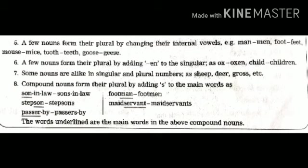Sixth: a few nouns form their plural by adding 'en' to the singular. For example: ox → oxen (add 'en' at the back), child → children (add 'r' then 'en'). Seventh: some nouns are alike in singular and plural numbers — for example: sheep, deer, goose, cross, etc. These remain the same whether singular or plural.